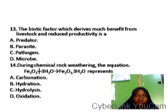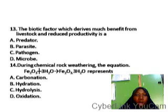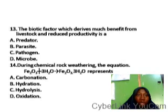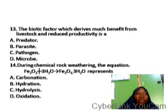Question thirteen: the biotic factor which derives much benefit from livestock and reduces productivity is dash. Biotic factors are the living factors that affect plant and animal production and distribution. The particular biotic factor that derives benefit from the host and reduces productivity is parasites. Parasites are organisms that live on the bodies of animals, suck their blood, and cause economic damage to livestock.